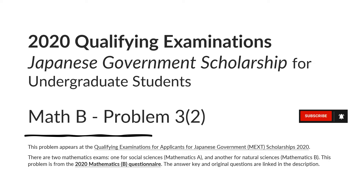There are two mathematics exams: one for Social Sciences, Mathematics A, and another for Natural Sciences, Mathematics B. This problem is from the 2020 Mathematics B questionnaire. The answer key and original questions are linked in the description.